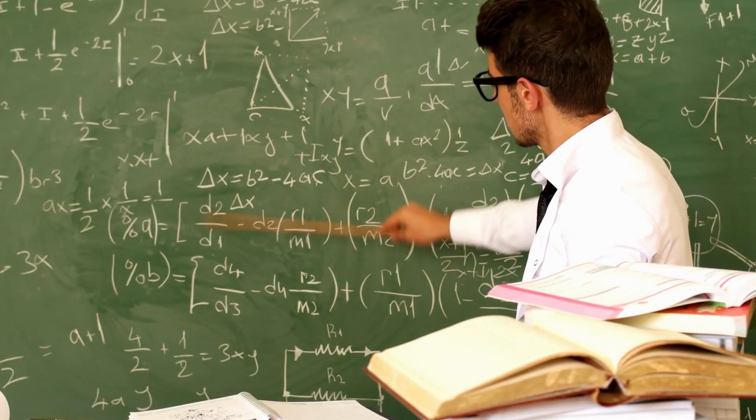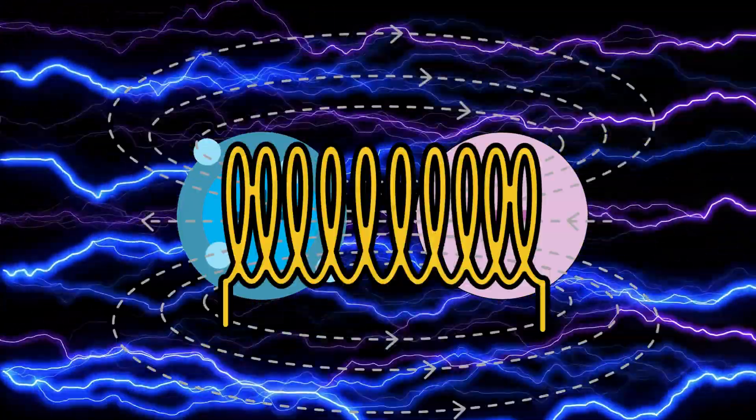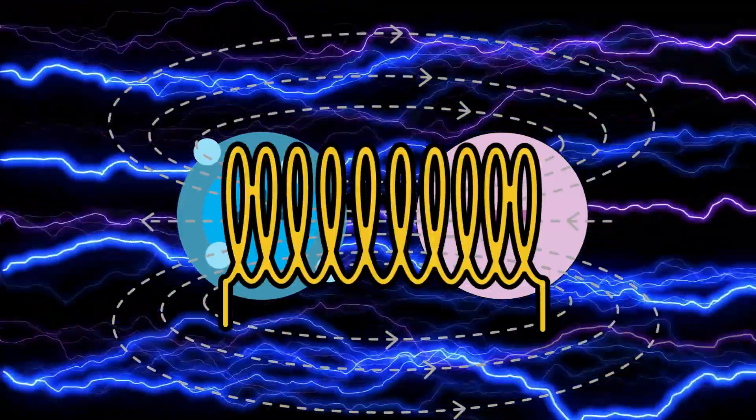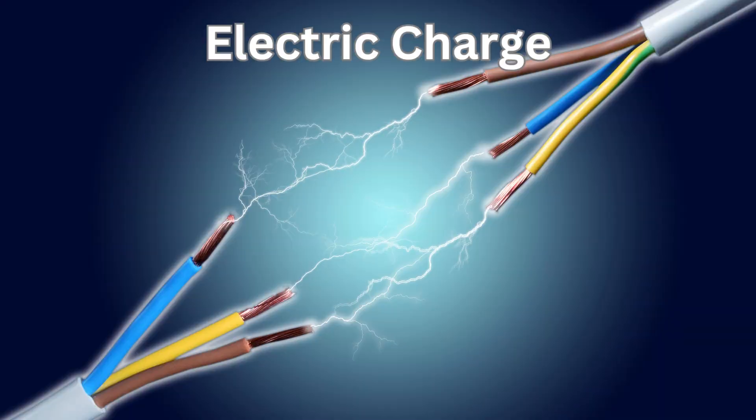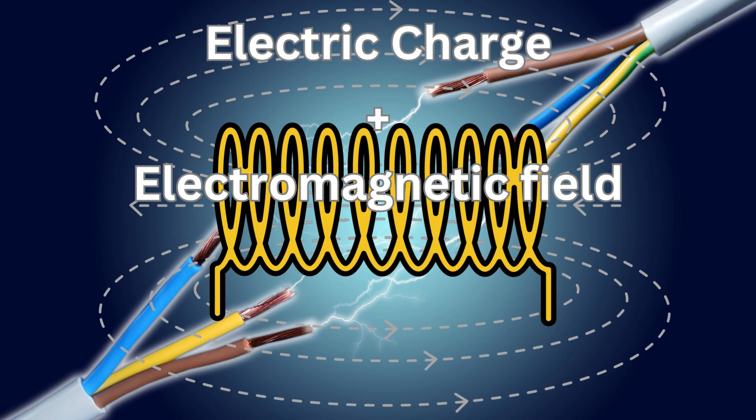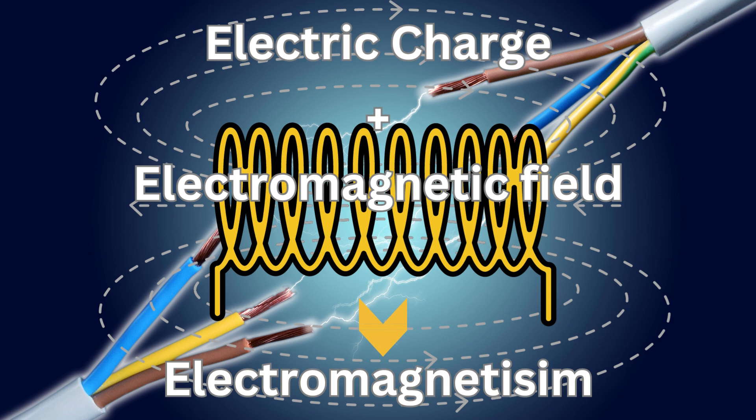It is a topic of physics that examines how electrically charged particles behave and how they interact with magnetic and electric fields. Electric charge and the electromagnetic field are the two core foundations for electromagnetism.